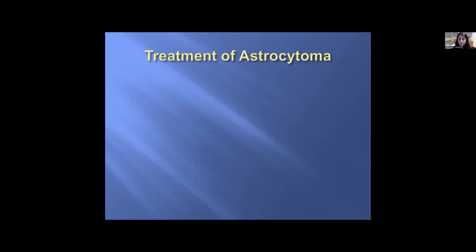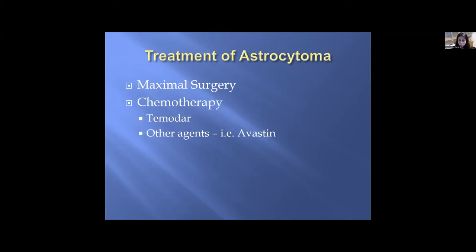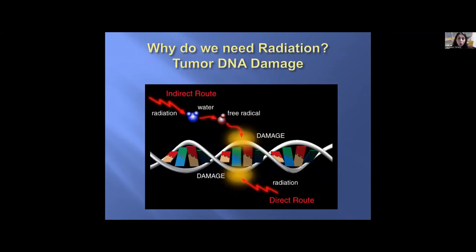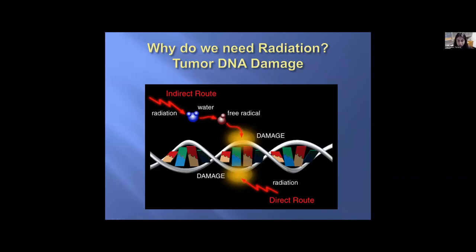Treatment of astrocytoma or glioblastoma starts with maximal surgery, followed by adjuvant therapy such as chemotherapy using Temozolomide or other agents, and radiation therapy. The radiation causes tumor DNA damage. The radiation hits a water molecule in the body, creates a free radical or oxidant, and directly damages the DNA — this is the indirect pathway. The direct pathway is that the radiation itself damages the DNA, but primarily we use the indirect route, which is why I advise patients to avoid antioxidants during radiation therapy.